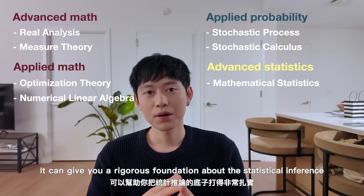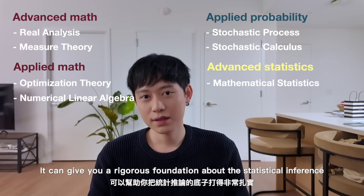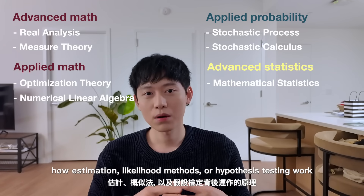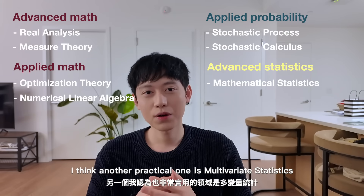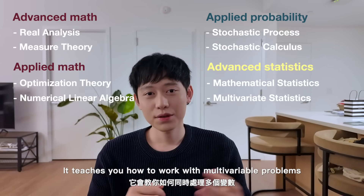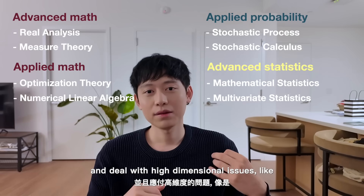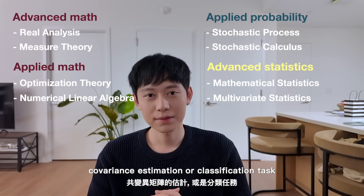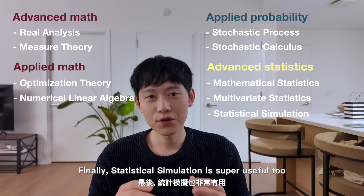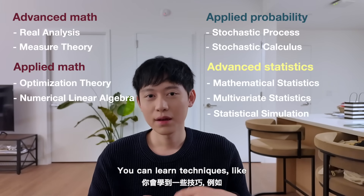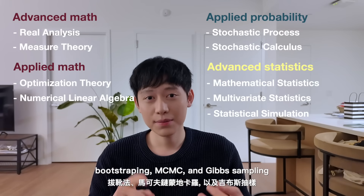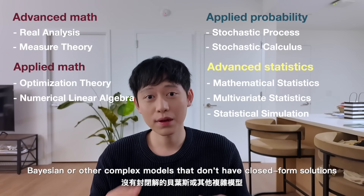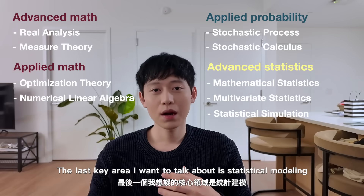Personally I think the most important thing is advanced statistics. A course like mathematical statistics gives you a rigorous foundation in statistical inference and helps you really understand estimation, likelihood methods, and hypothesis testing. Another practical one is multivariate statistics — it teaches you how to work with multi-variable problems and deal with high-dimensional issues like covariance estimation or classification tasks. Statistical simulation is super useful too: techniques like bootstrapping, MCMC, and Gibbs sampling are powerful tools to approximate Bayesian or other complex models that don't have closed-form solutions.